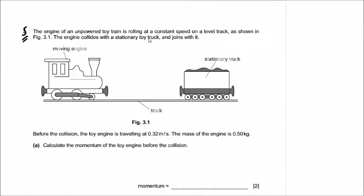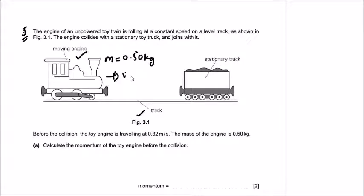Question number five. An unpowered toy train engine rolls at constant speed on a level track. The engine collides with a stationary toy truck and joins with it. Before the collision, the toy engine is traveling at 0.32 meters per second. The mass of the engine is 0.50 kilograms. Calculate the momentum of the toy engine before the collision.